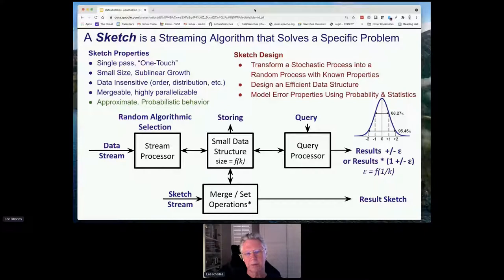The process of designing sketches is quite involved. The basic art is to transform a stochastic process into a random process with known properties, then design an efficient data structure to match these properties. Then you mathematically model the error properties using probability and statistics. Most of our sketches have formal research papers that back them up in the literature, all referenced to major research.